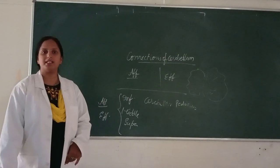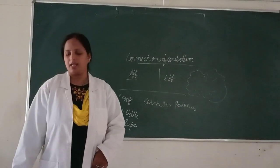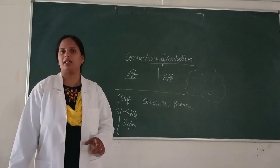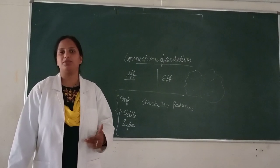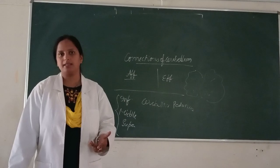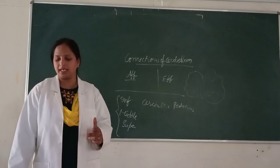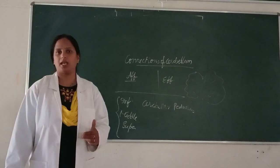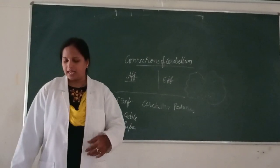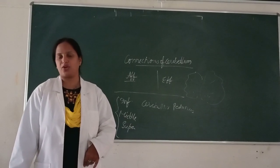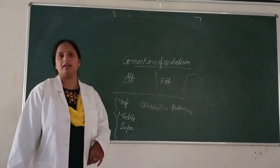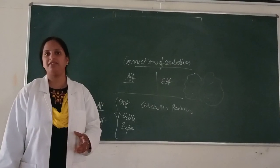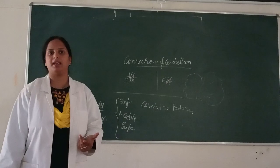The cortico-reticular-cerebellar pathway is an uncrossed pathway, whereas the cortico-ponto-cerebellar pathway and the cortico-olivo-cerebellar pathway are crossed pathways. Next, the fibers coming from the spinal cord are the spinocerebellar tracts: anterior spinocerebellar tract, posterior spinocerebellar tract, and the cuneocerebellar tract. The third afferent source is the vestibular nerve, and the fourth is the red nucleus and the tectum.